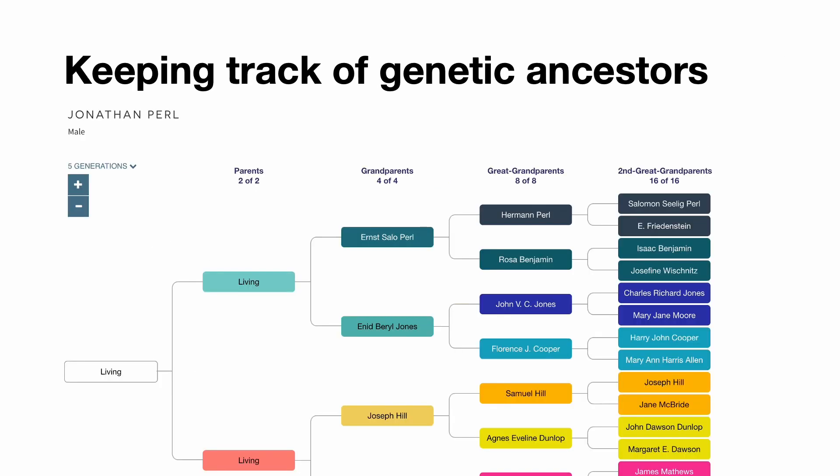Identifying and verifying genetic ancestors is an ongoing process, and you can track this at DNA Painter. If you hover over any node in the tree view, you will see a button that says 'mark as a genetic ancestor.'